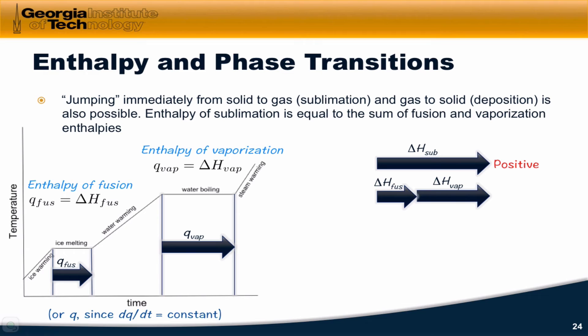The process of going from a solid to a gas is the sum of the process of going from a solid to a liquid and a liquid to a gas. So delta H for sublimation equals the sum of delta H for fusion and delta H for vaporization. Delta H for deposition, which is the exact opposite process, is just the negative of delta H for sublimation.